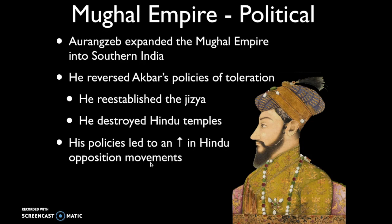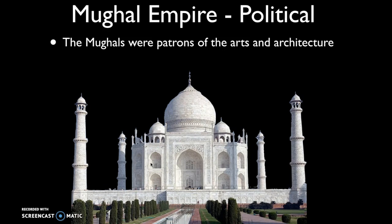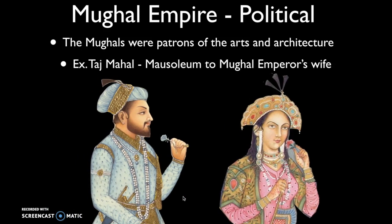The Mughal Empire is perhaps most well known as patrons of the arts and architecture. Their most famous monumental structure is the Taj Mahal, built by Emperor Shah Jahan as a mausoleum — a tomb — for his wife, who died while giving birth to their 14th child. He spent nearly the rest of his life constructing this ornate piece of monumental architecture, which was designed to legitimize the power of the ruler.